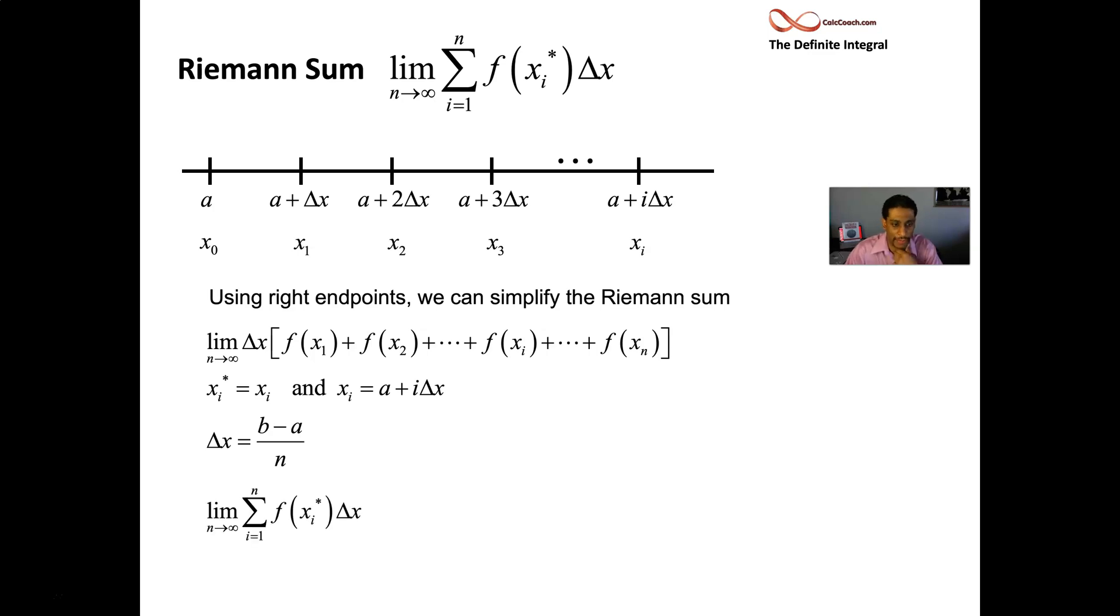Delta x is b minus a over n, multiplying the function evaluated at a plus i times b minus a over n. Delta x won't depend on your i counter, so you can pull it out of the summation. We have b minus a over n in front, then the summation i equals one to n of f evaluated at a plus i delta x. We're ready.